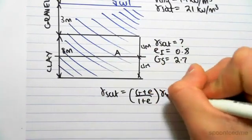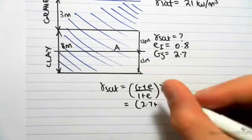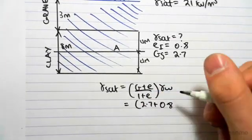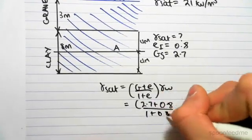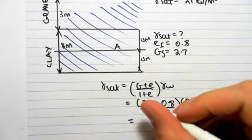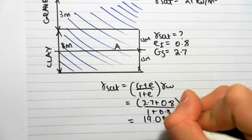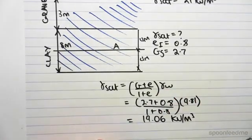We know that gamma sat equals (g plus e) divided by (one plus e) times gamma w, which would be (2.7 plus 0.8) divided by (1 plus 0.8) times gamma w, which is 9.81. This would equal around 19.06 kN per meter cubed. So we've found gamma sat now to be 19.06.